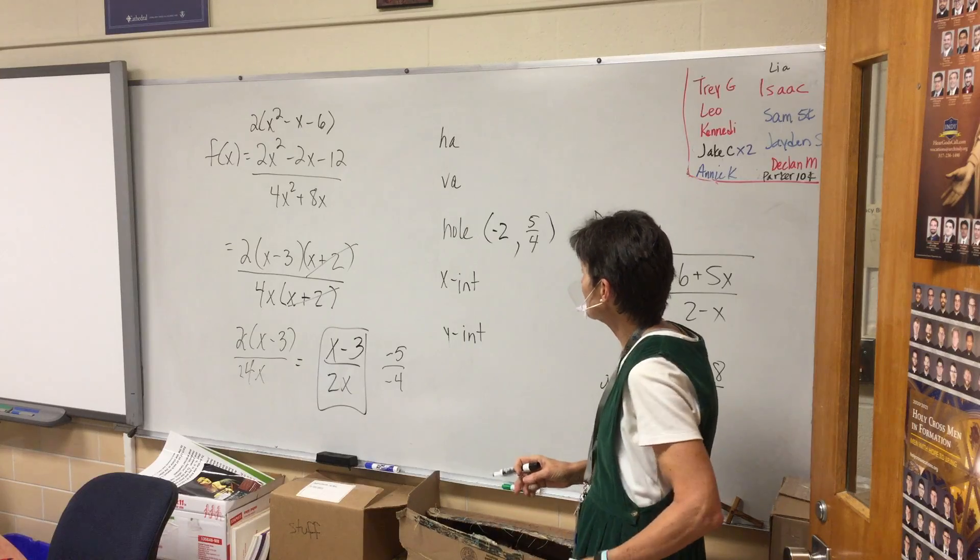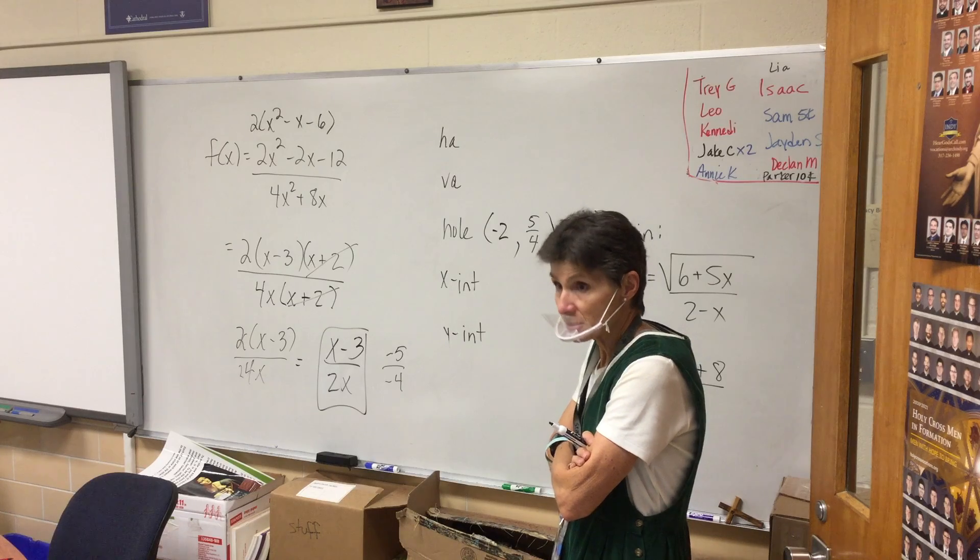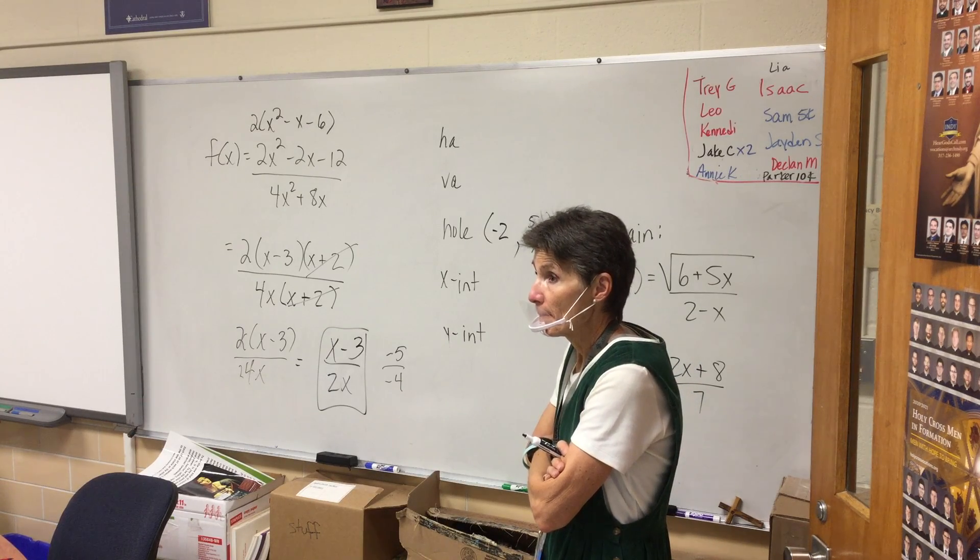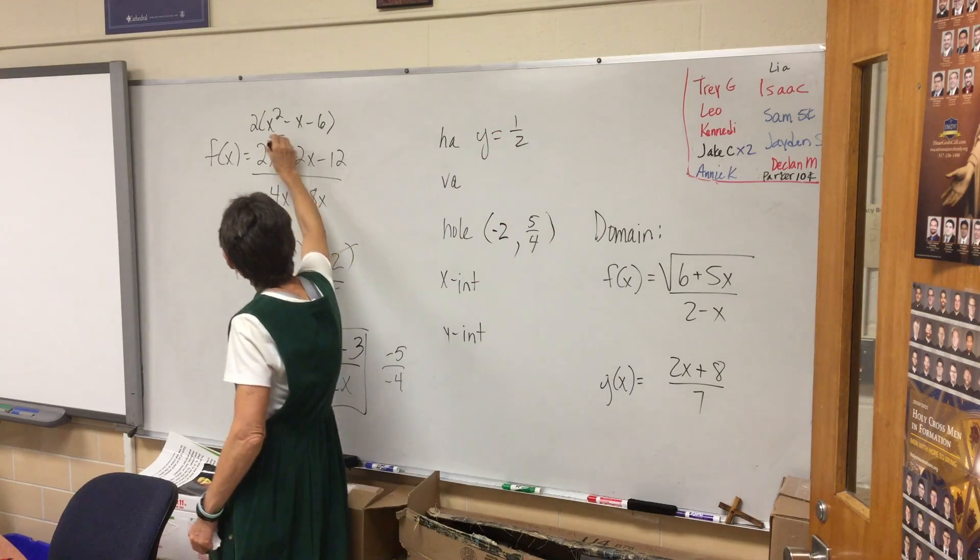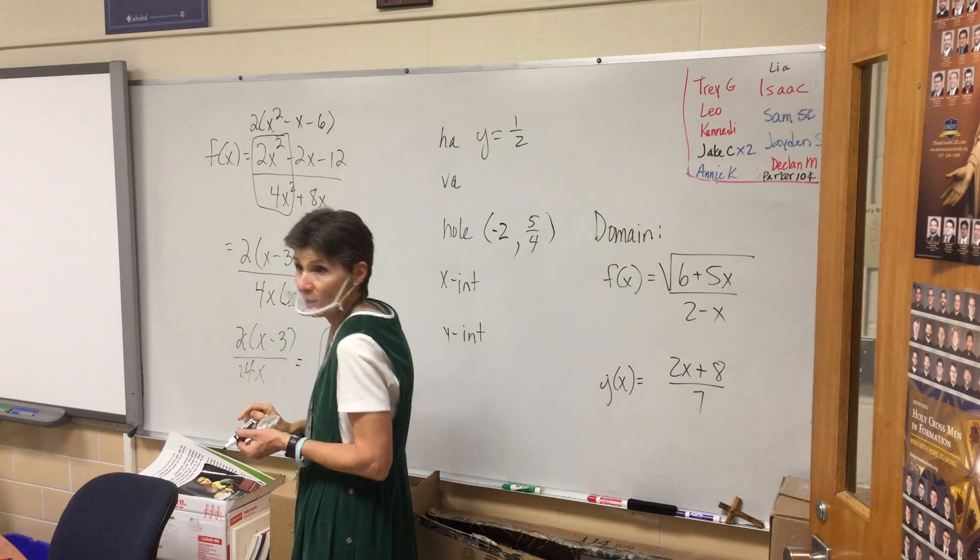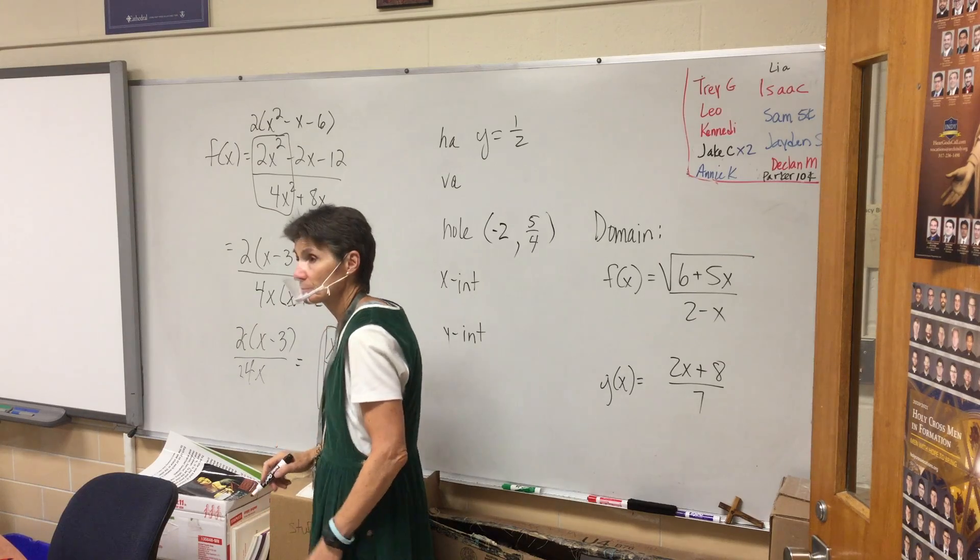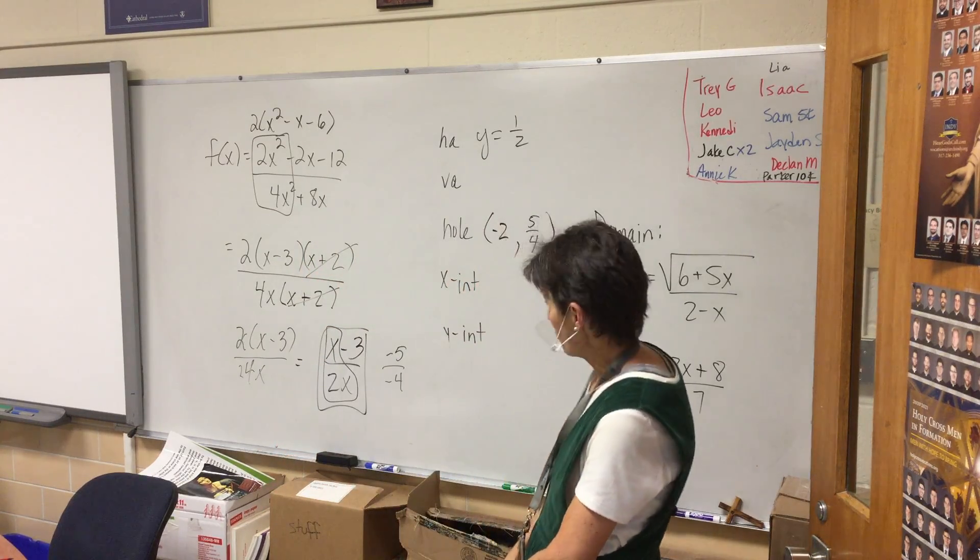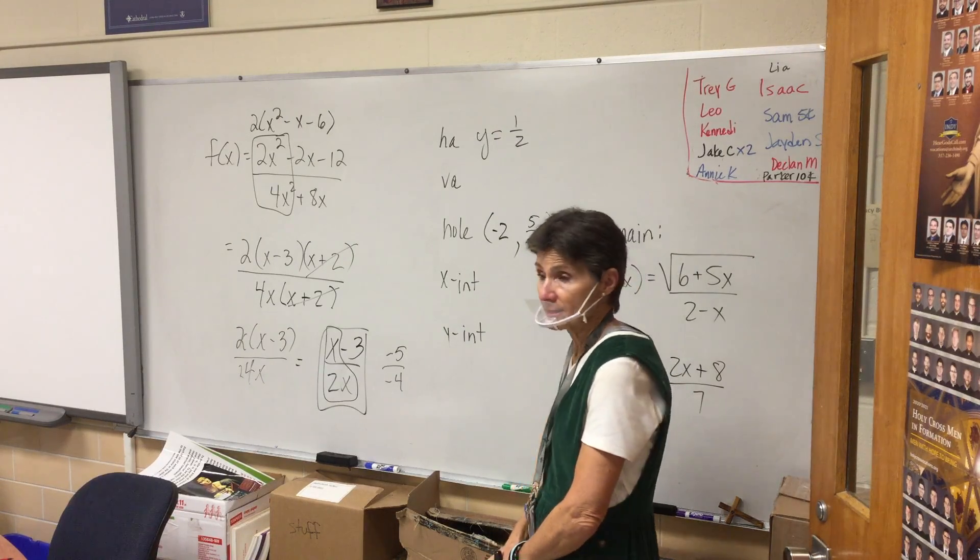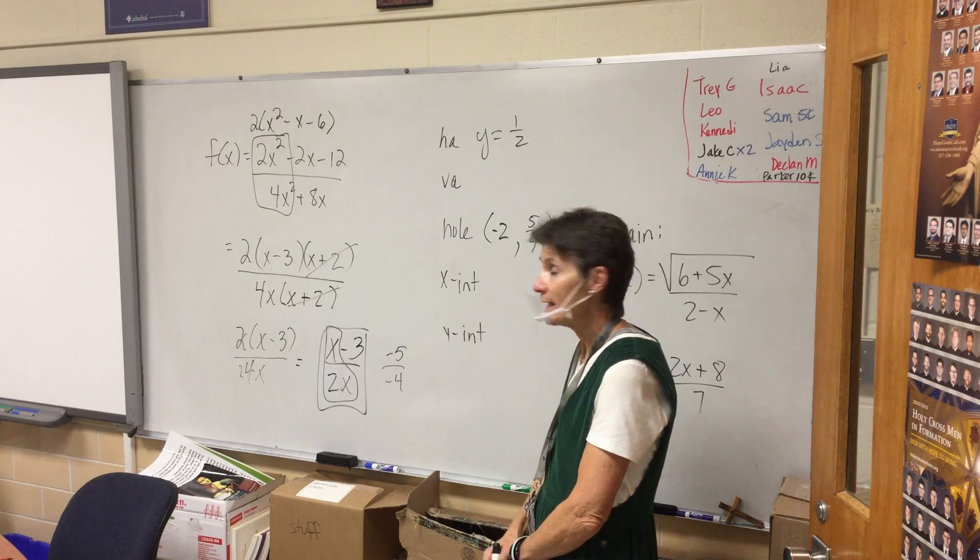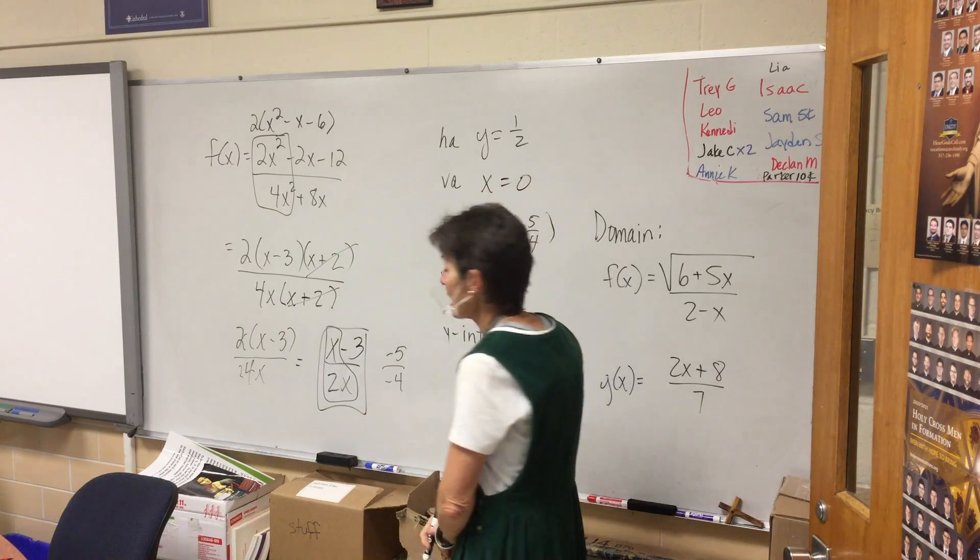If you don't reduce, if you don't cancel out the two and the four, you're going to get negative 10 over negative 8, which is still going to be 5 fourths. Do I have a horizontal asymptote? Yes. Where is it? Y equals one half. Why does y equal one half? Well, you can either box in right here from the beginning or you can box in one right here. My horizontal asymptote is one half. Do I have a vertical asymptote? Yep. What can x not be? Zero. Your vertical asymptote is at zero.